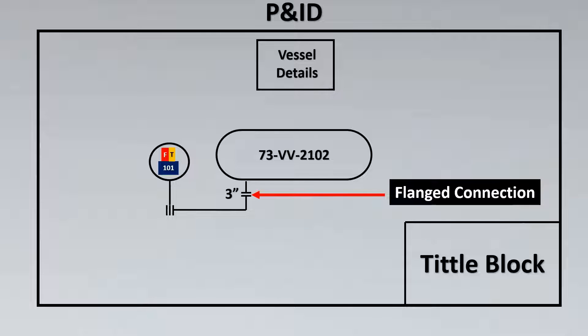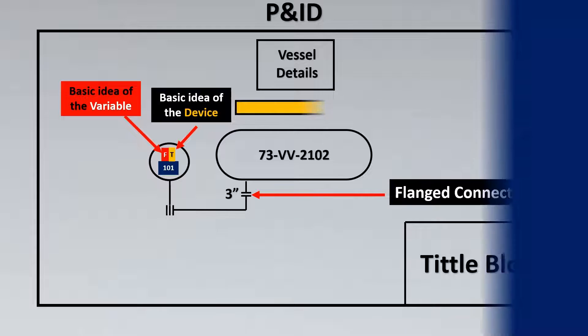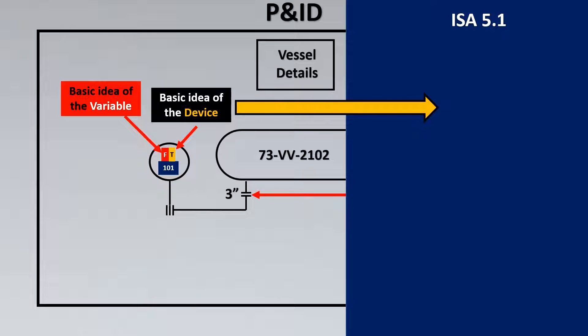So let's try to look now what is inside the bubble. You have three components inside the bubble. The first one is actually the variable that is being manipulated or that is being measured and controlled. Here the variable is flow. Then you have the second letter which is basically the type of device that is being used to either measure or control it.